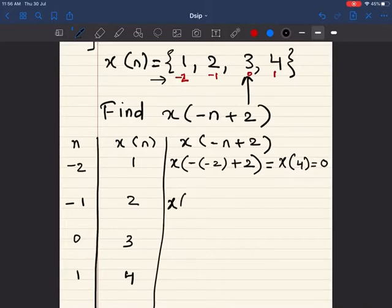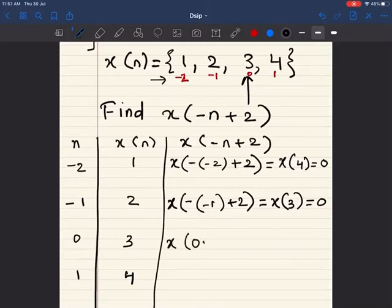Next is -(-1), so this is going to be x(3), the value of which we do not know, so this is also going to be 0. This is x(0+2) = x(2), the value of which again we do not know, so this is also going to be 0.